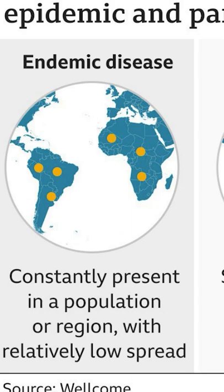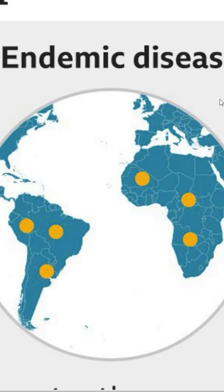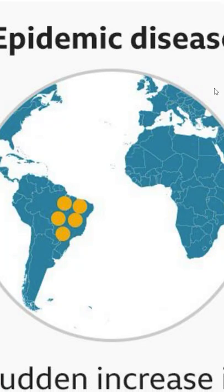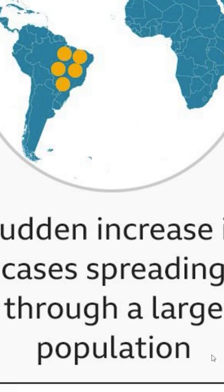What's the difference between an endemic, epidemic, and pandemic disease? An endemic disease is constantly present in a population or region with relatively low spread. An epidemic is a sudden increase in cases spreading through a large population.